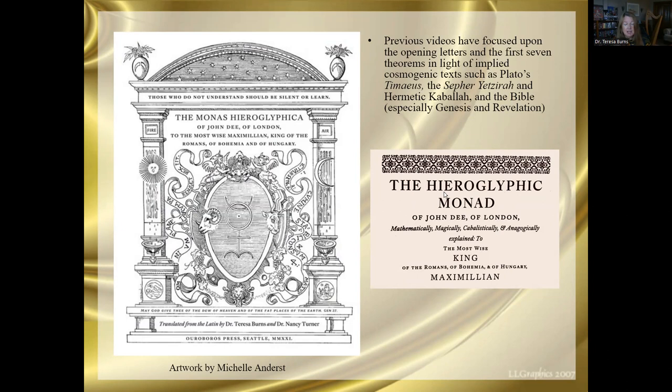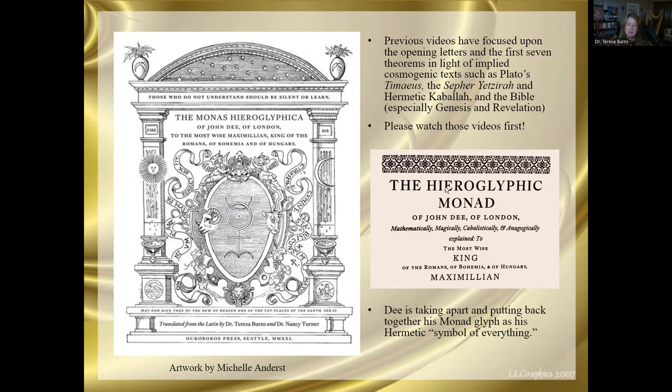Okay, so if you are here, hopefully you've been watching the previous videos in the class on the letter to Maximilian. We went into that word by word, literally. Also, the letter to Printer Silvius. We also had some introduction, both teased out of the letter and in an introductory video, looking at cosmogenic texts, texts about the creation of the universe, like Plato's Timaeus, like the Sefer Yetzirah, its representation in Hermetic Kabbalah and the Bible, especially Genesis and Revelation. And if you're here, it goes without saying that you know who John Dee is, and you know what the Monas Hieroglyphica is. This isn't a complicated class, but it's not an introduction to who John Dee is class.